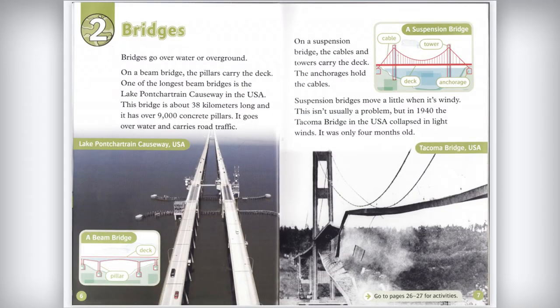Bridges go over water or over ground. On a beam bridge, the pillars carry the deck. One of the longest beam bridges is the Lake Pontchartrain Causeway in the USA. This bridge is about 38 kilometers long and has over 9,000 concrete pillars. It goes over water and carries road traffic.